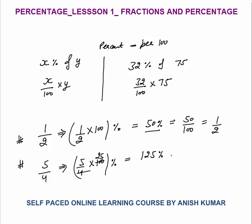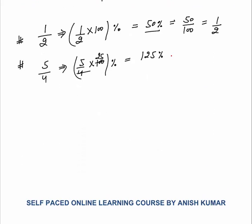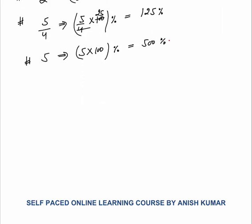Another example: 5 as a number equals 5 into 100 percent, which is 500 percent. Any number you want to convert into percentage, just multiply by 100. Now what kind of questions are important in aptitude exams? From the exam point of view, you must know some fraction-to-percentage conversions.